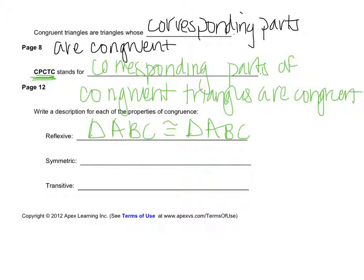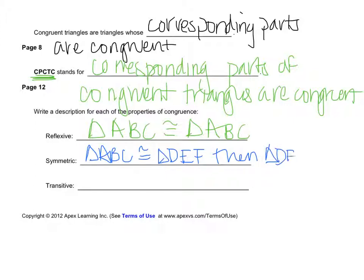The symmetric property says that if triangle ABC is congruent to triangle DEF, then we could also say that triangle DEF is congruent to triangle ABC.